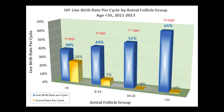This graph shows IVF live birth rates at our center for couples with a female partner under age 35. Patients are split into four antral groups: high, medium high, medium low, and low. The live birth rates per cycle are shown in the blue columns.